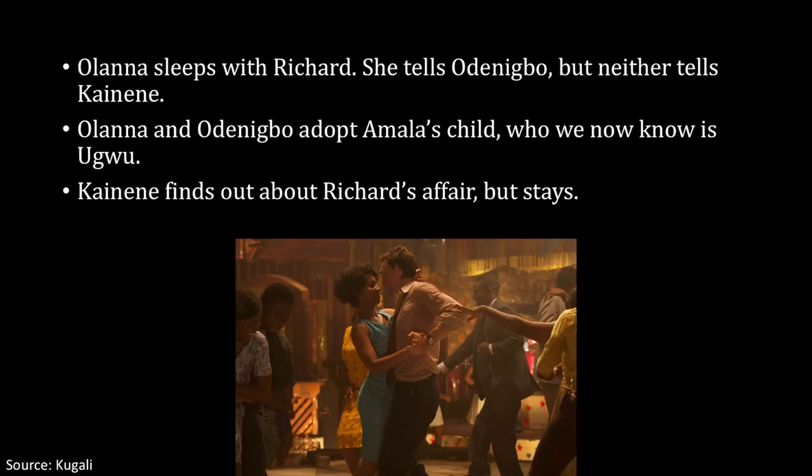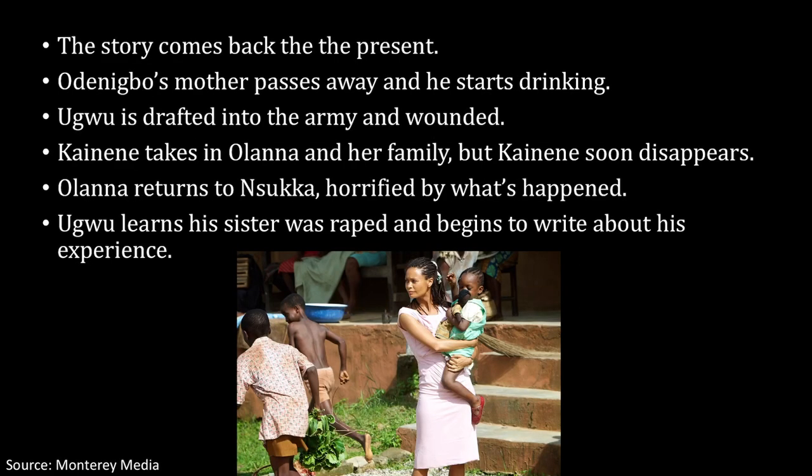Olanna then sleeps with Richard. She tells Odenigbo but neither tells Kainene. Olanna and Odenigbo adopt Amala's child, who we now know is Ugwu. Kainene finds out about Richard's affair with her sister but she stays.